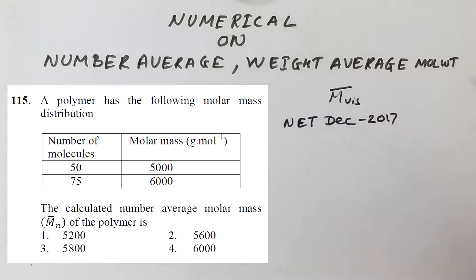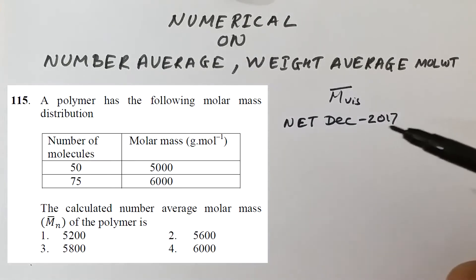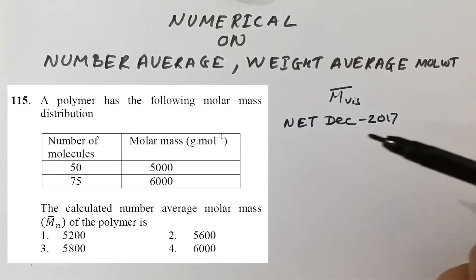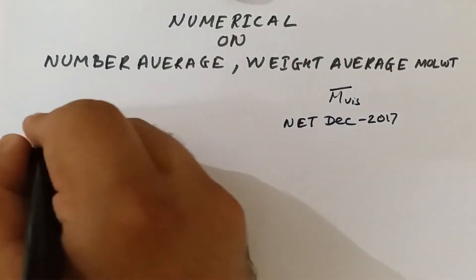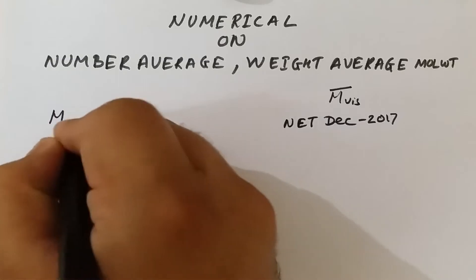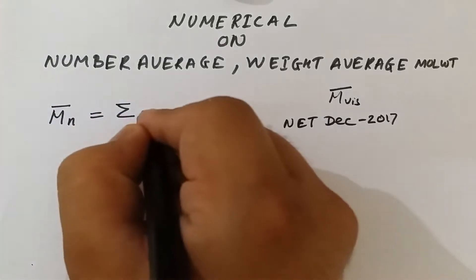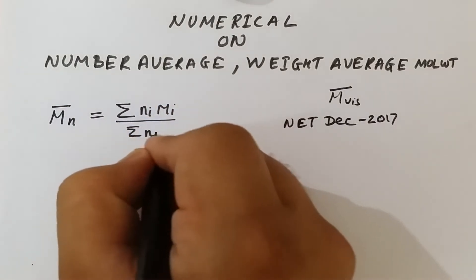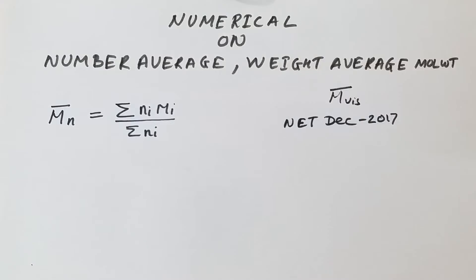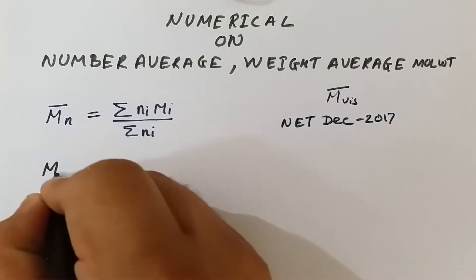As you can see on the screen, we have been given the number of molecules and their molar masses, and we have to calculate the number average molar mass. Let us recall the formula: number average molar mass is equal to summation of Ni·Mi divided by summation of Ni.